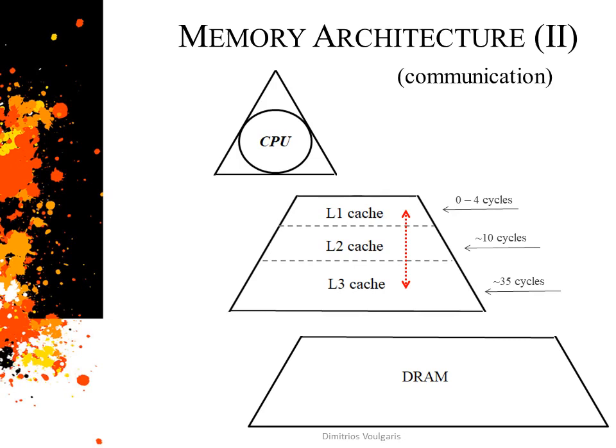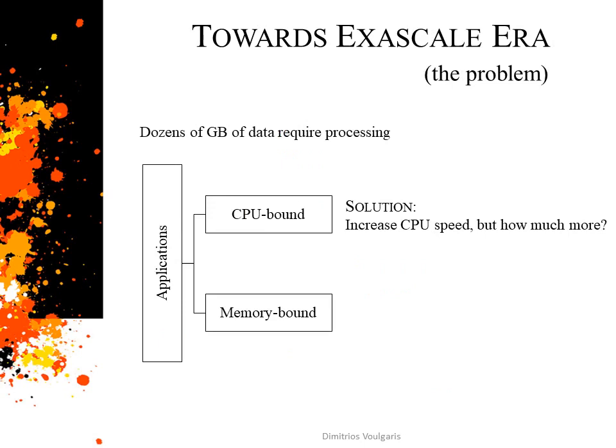It is obvious that all data cannot fit in these fast memories, and here is when things take a turn for the worse. In case of a last-level cache miss, the system is made to access the slow DRAM memory in order to fulfill its need for data. To spice it up a little, think of the current shift towards big data — dozens of datasets require processing, and of course they cannot all be stored in the small yet rapid caches.